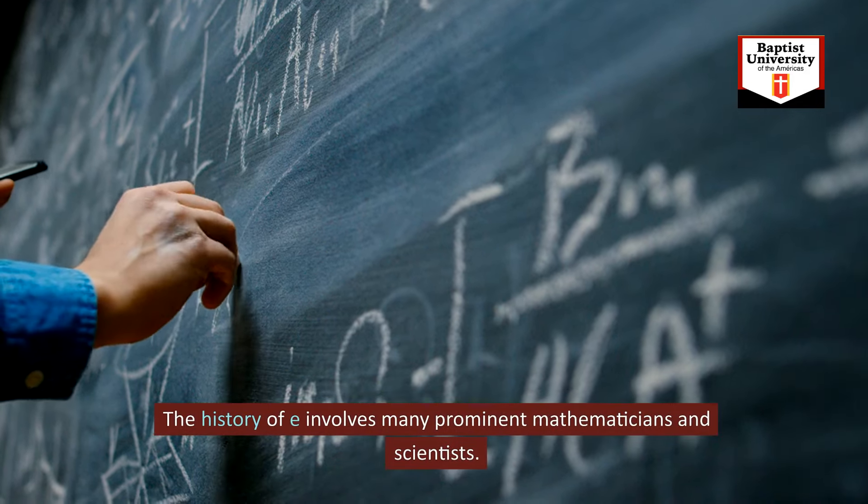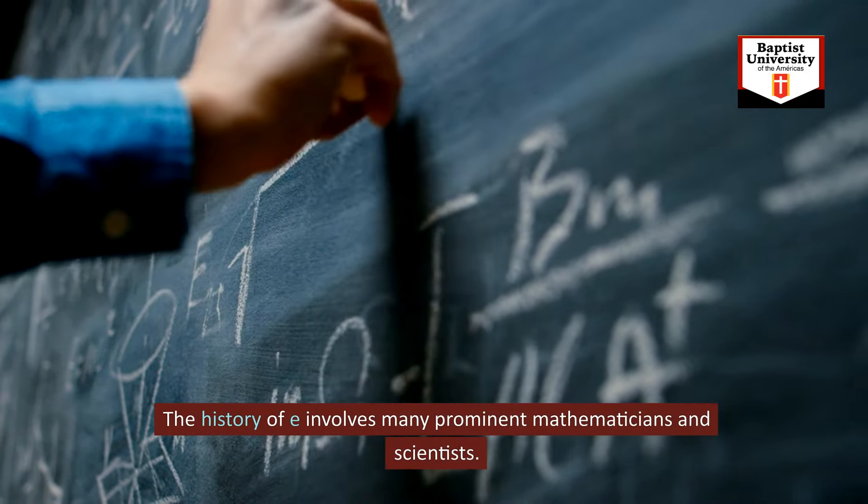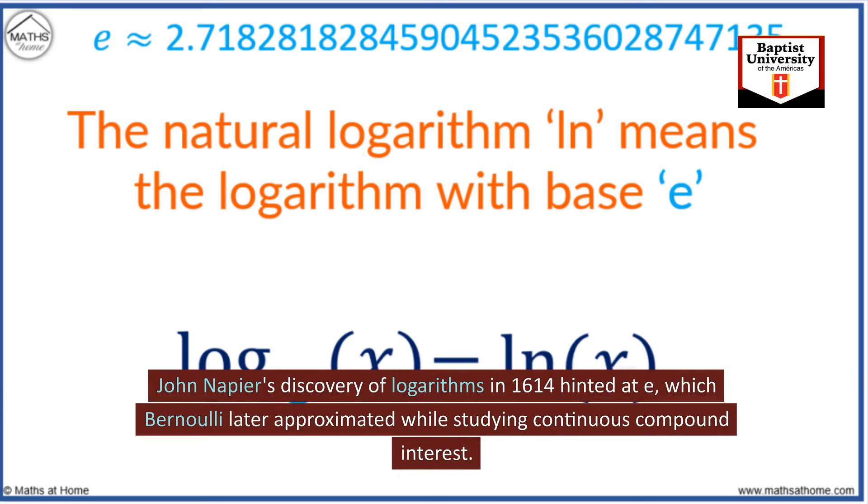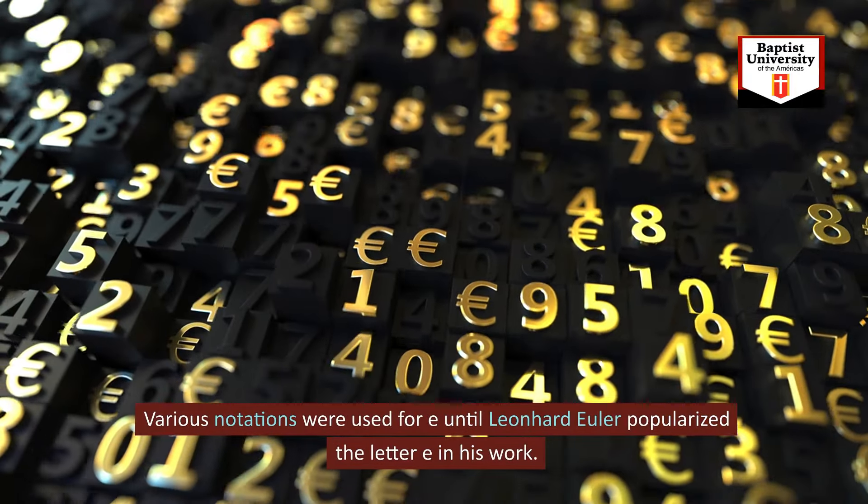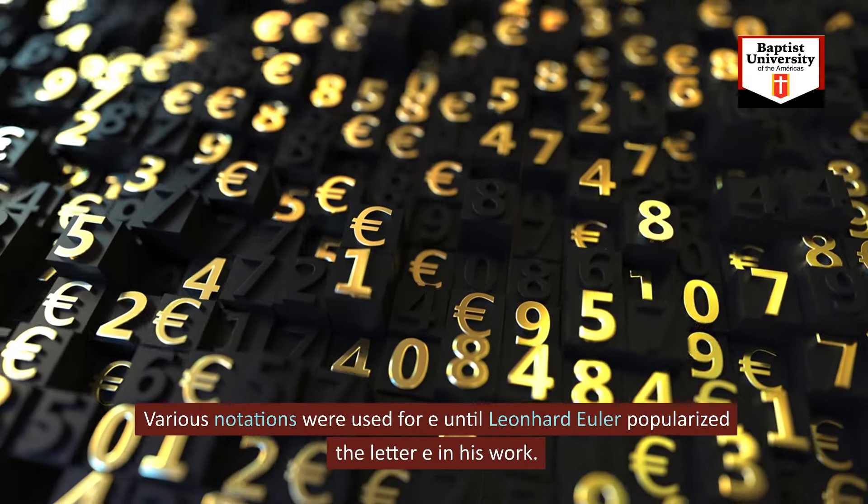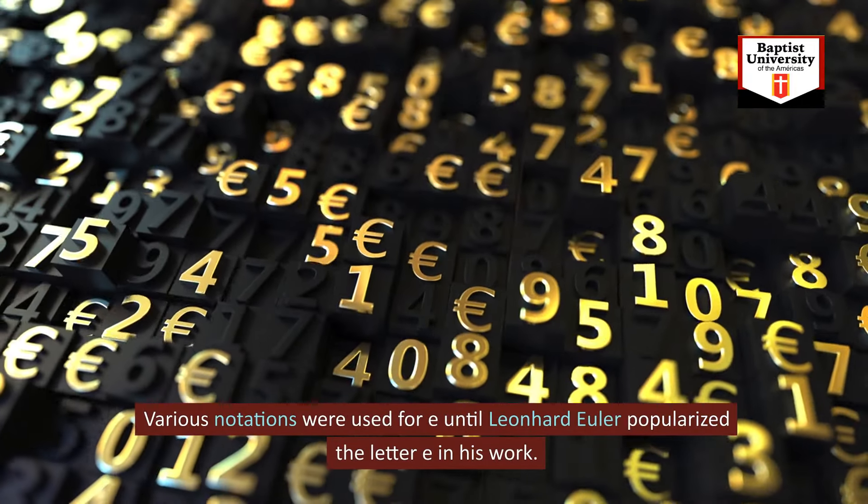The history of E involves many prominent mathematicians and scientists. John Napier's discovery of logarithms in 1614 hinted at E, which Bernoulli later approximated while studying continuous compound interest. Various notations were used for E until Leonhard Euler popularized the letter E in his work.